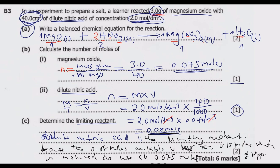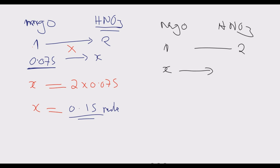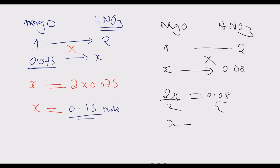Just to emphasize: if you chose to work with nitric acid you still get the same answer. Using the same 1:2 mole ratio of magnesium oxide to nitric acid from the balanced equation, ask how many moles of magnesium oxide are needed to use up 0.08 moles of nitric acid. Cross multiplying: 2x = 0.08, so x = 0.04 moles of magnesium oxide needed. Since we have 0.075 moles — more than 0.04 — magnesium oxide is in excess and nitric acid is the limiting reactant. This is how you answer this question to get full marks.